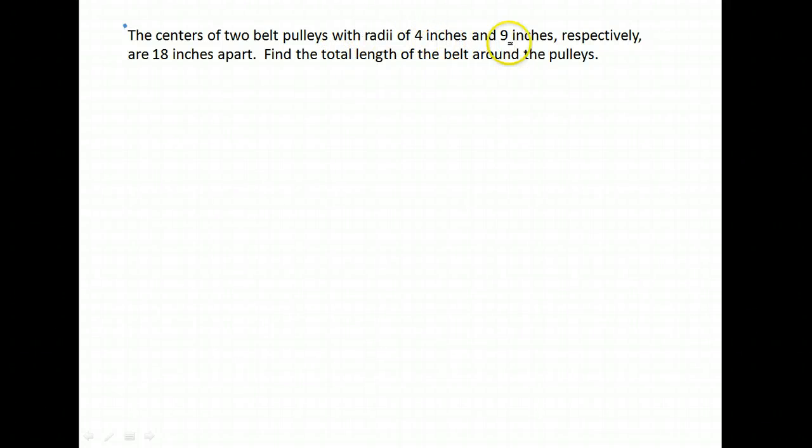Two belt pulleys with radii of 4 inches and 9 inches respectively are 18 inches apart. Find the total length of the belt that goes around those pulleys.